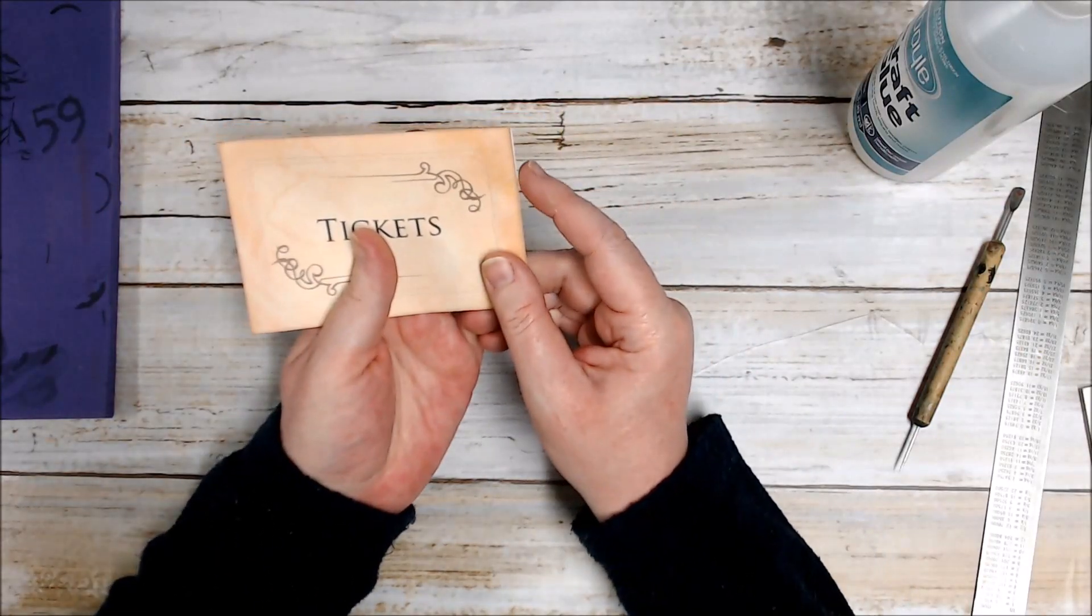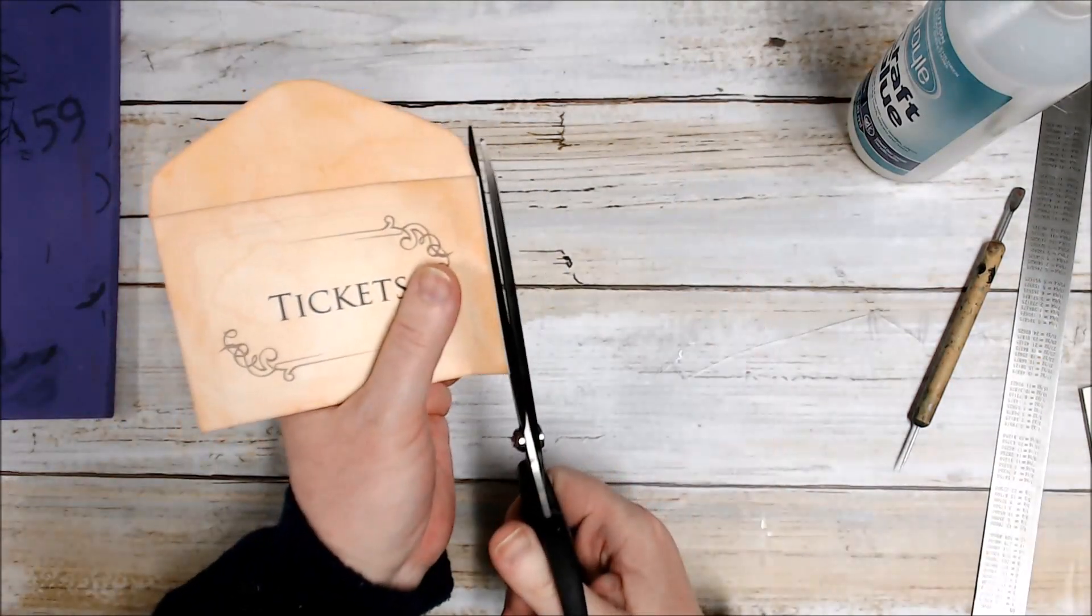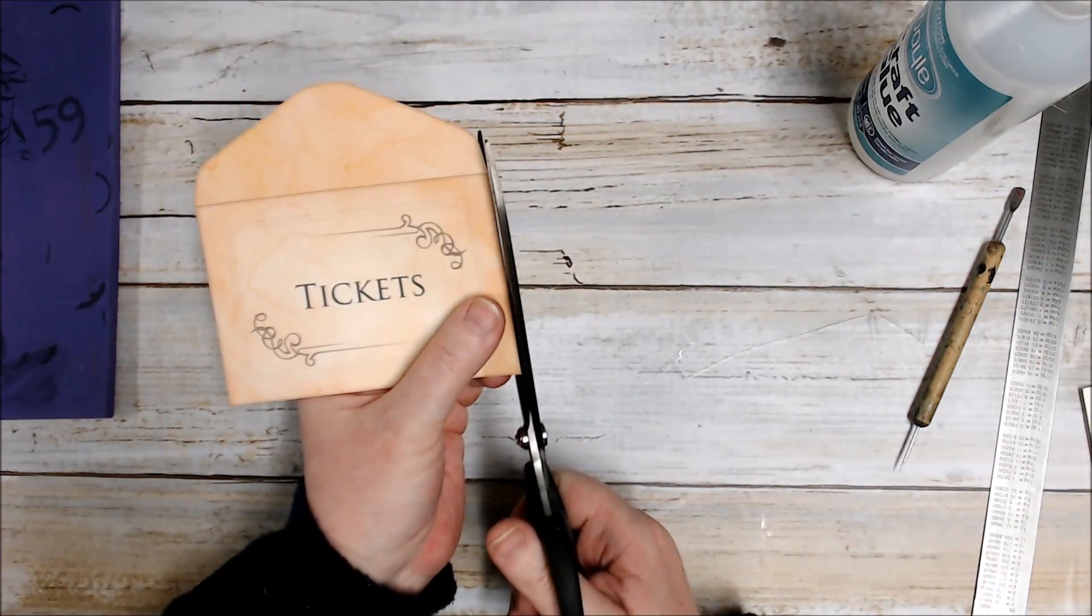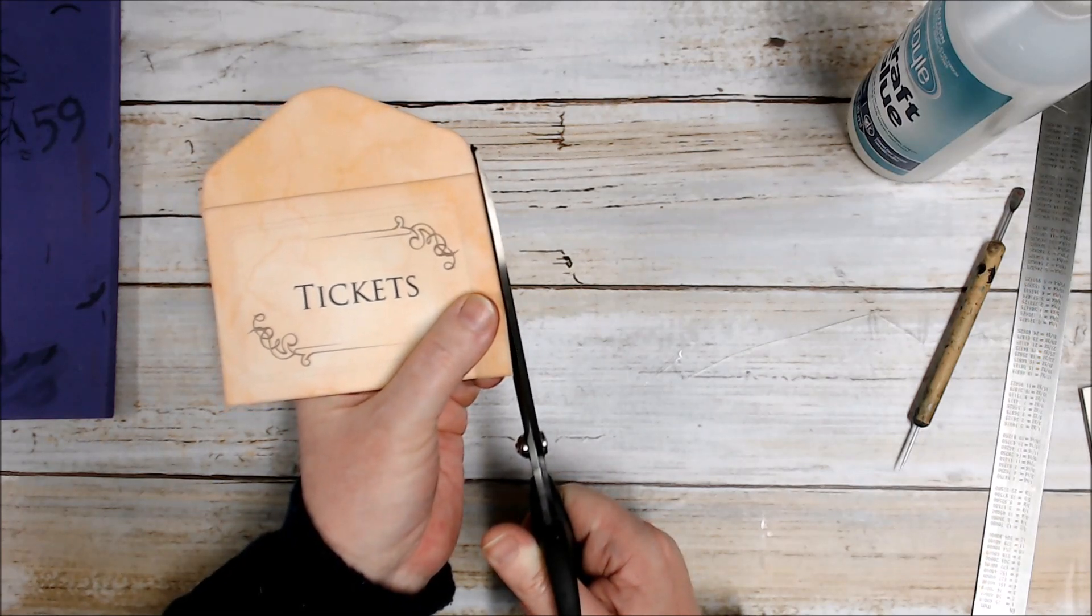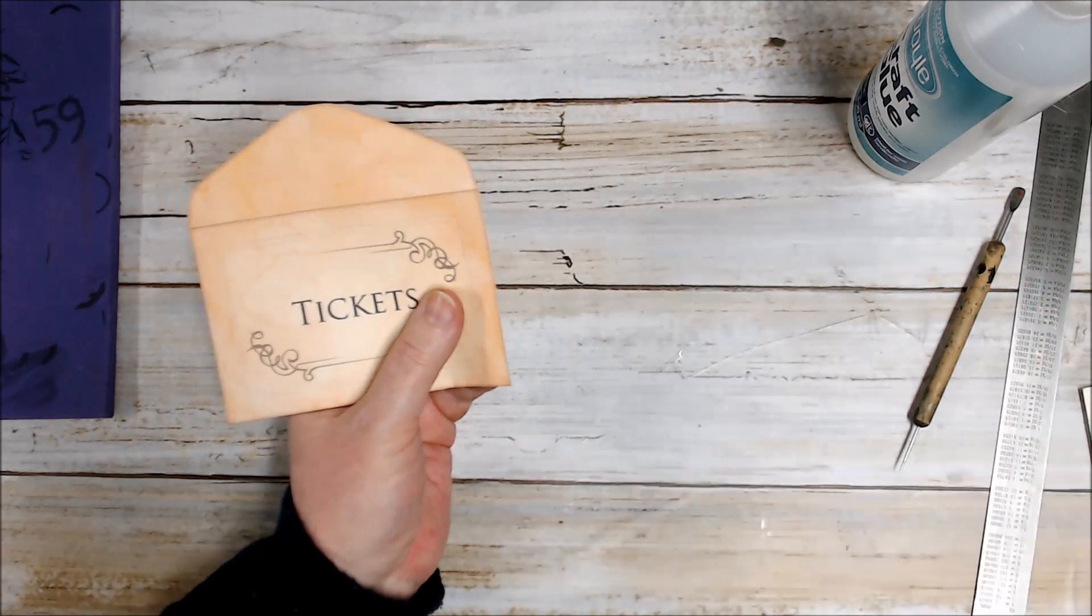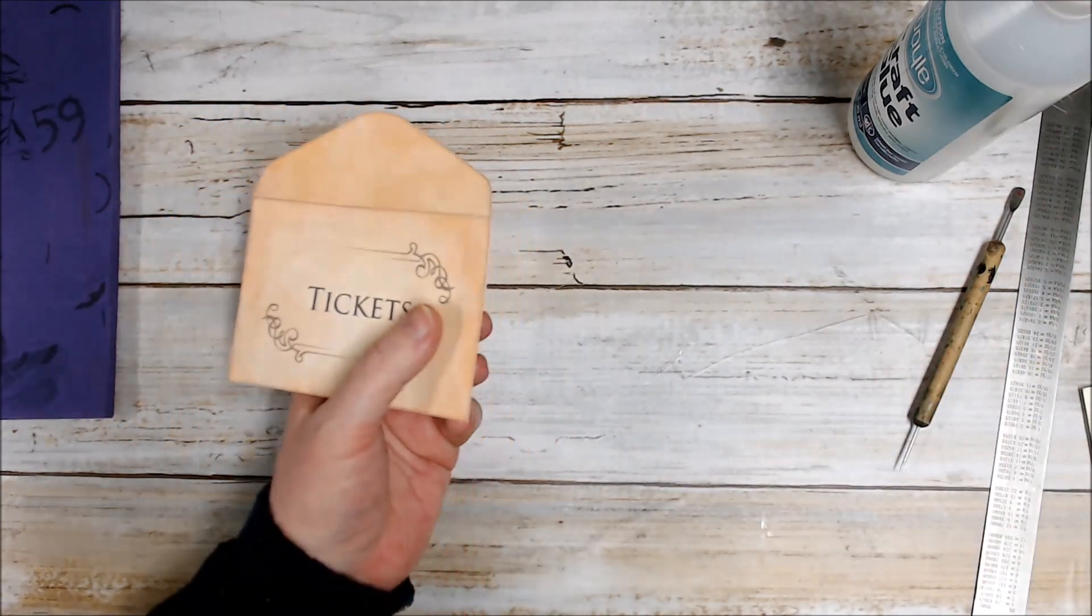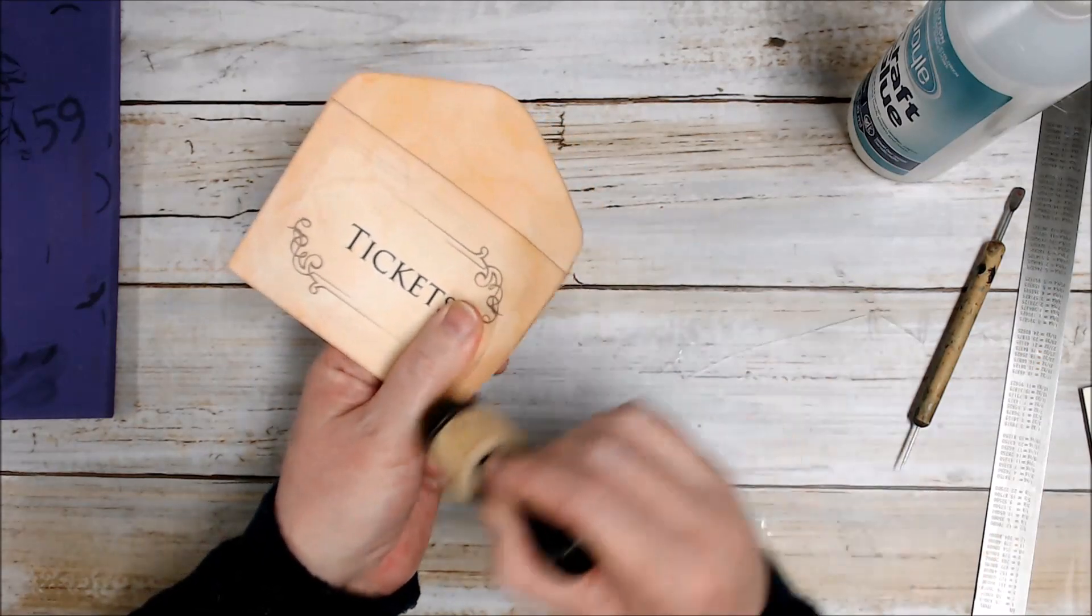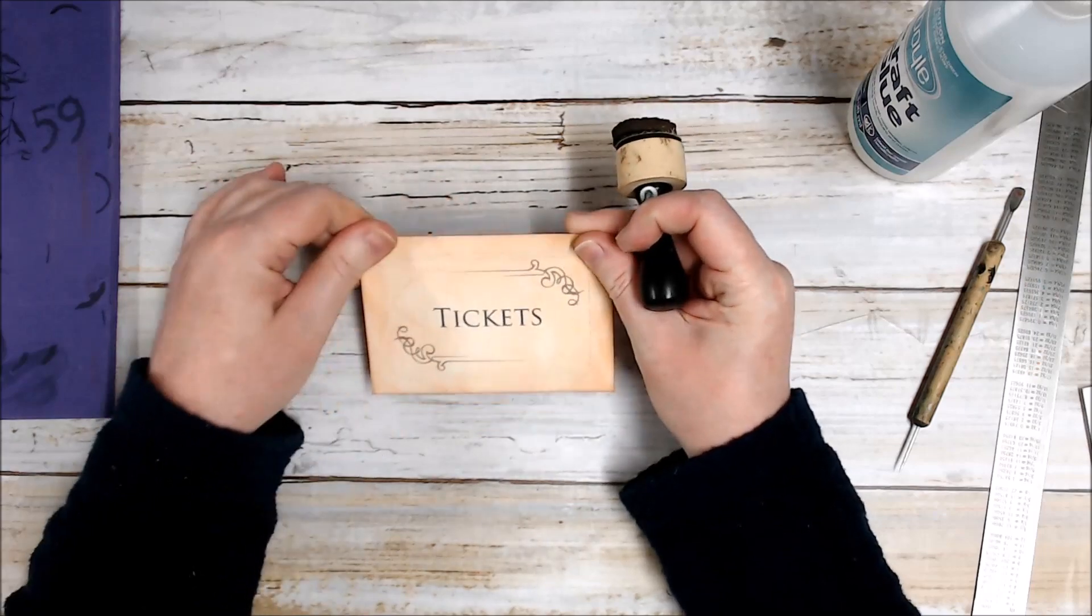Now I've got a tiny little edge here, so I can go in with my scissors and just carefully take that little extra piece off. And then just go along with a little bit of ink. So that's my first envelope ready there.